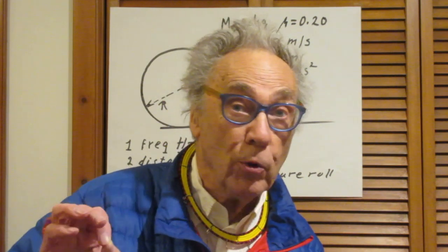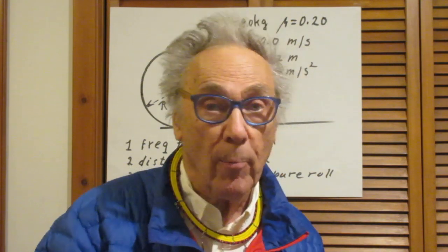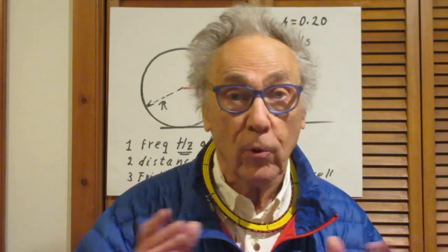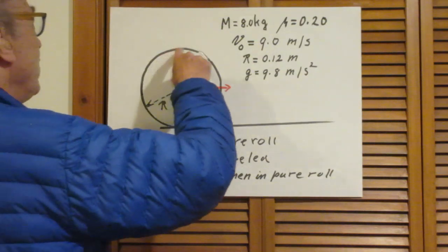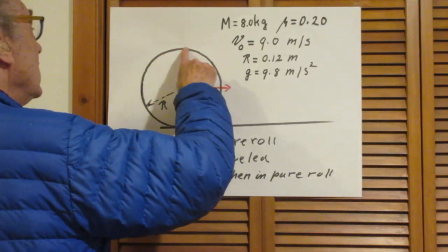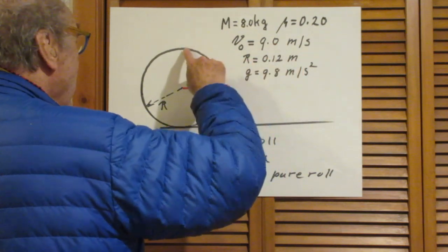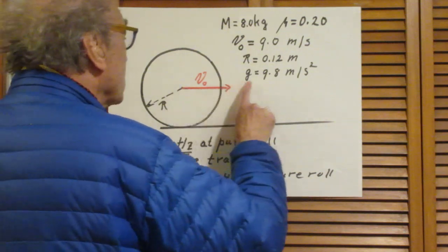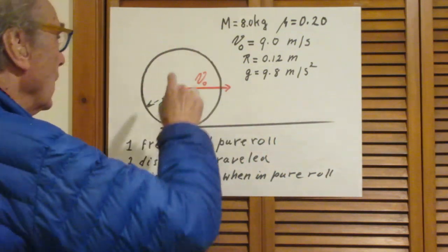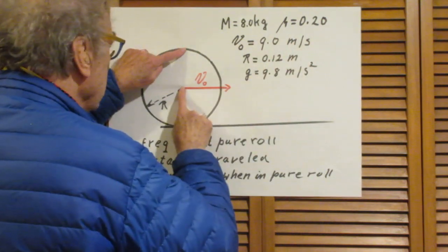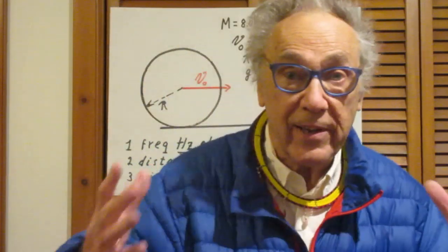If you forgot the meaning of pure roll, you should go back to several of my problems of the past, because I use that pure roll concept very often. But you can also look it up using Google. Pure roll means that if this point here has made one complete rotation and comes back, because it is rolling, the center of mass — the center of the ball — has traveled over the distance 2πR. So this point goes like this, and when it is here, the center has traveled over the distance 2πR. That is the definition of pure roll.